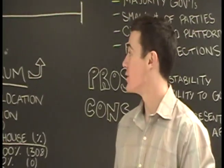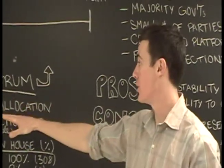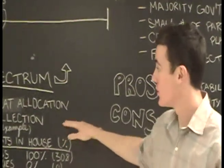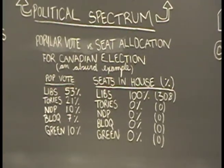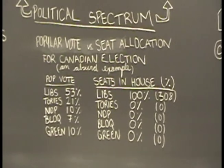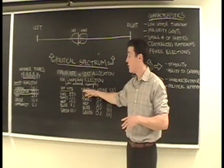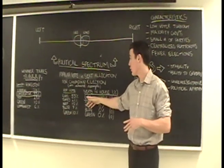So, something really unique happens in this system when you look at the popular vote versus the seat allocation in the House after the election. So, a theoretical explanation could be that the overall popular vote of all the 308 seats could turn out to be the Liberals getting 53% of that popular vote.